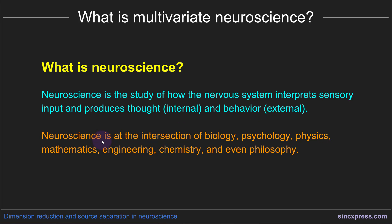Neuroscience is a fascinating and really complex field because it is at the intersection of many other fields including biology, psychology, physics, mathematics, engineering, chemistry, and yes even a little bit of philosophy makes its way into neuroscience.